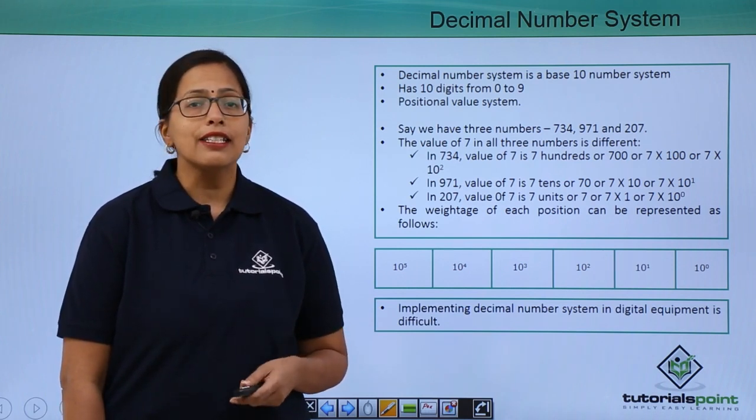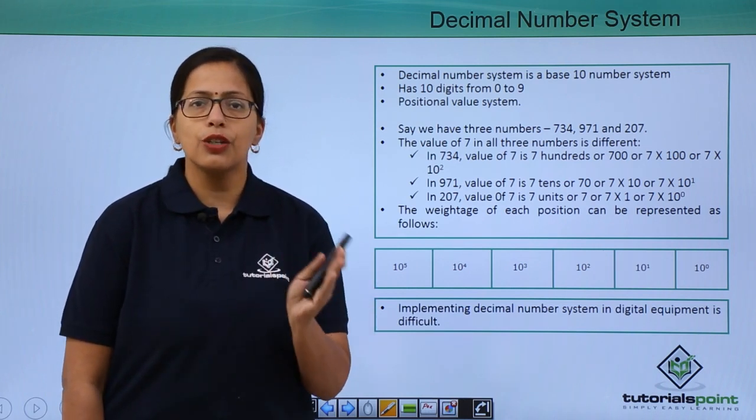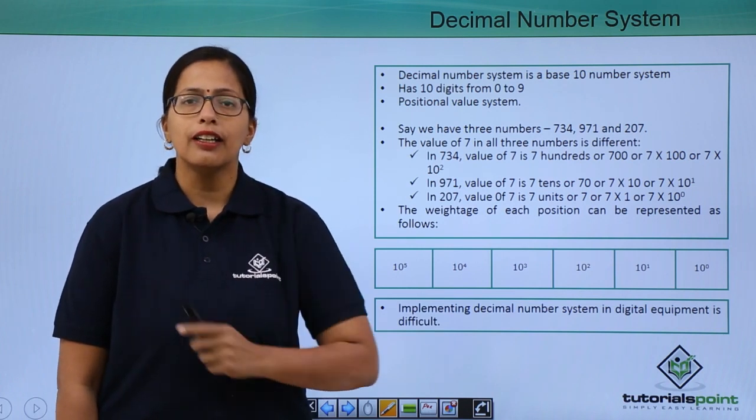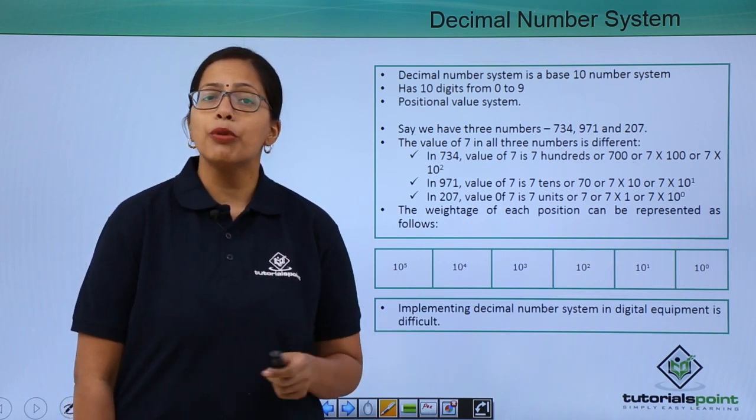Decimal number system has 10 numbers, 0 to 9, 0, 1, 2, 3, 4 till 9 and it is a positional value system.